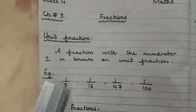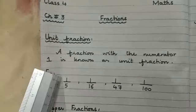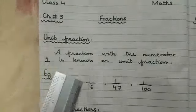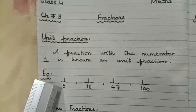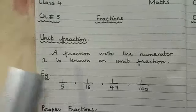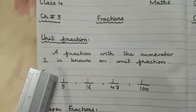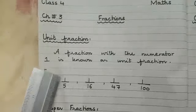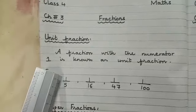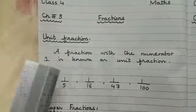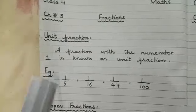For example, 1 by 5. What is the numerator? 1. What is the denominator? 5. The condition is that the numerator must be 1. So this is a unit fraction.